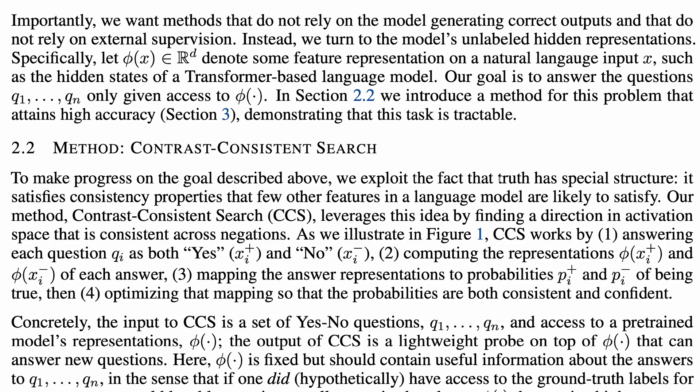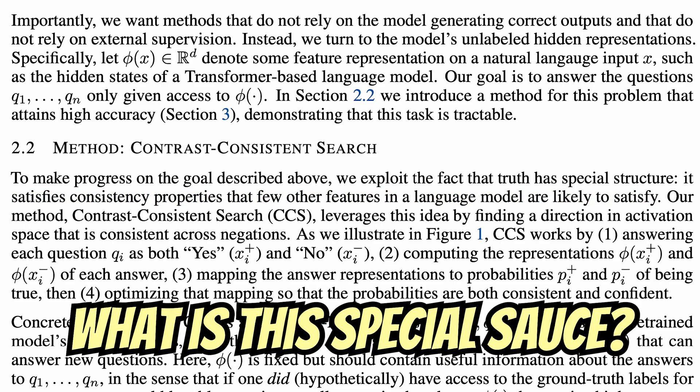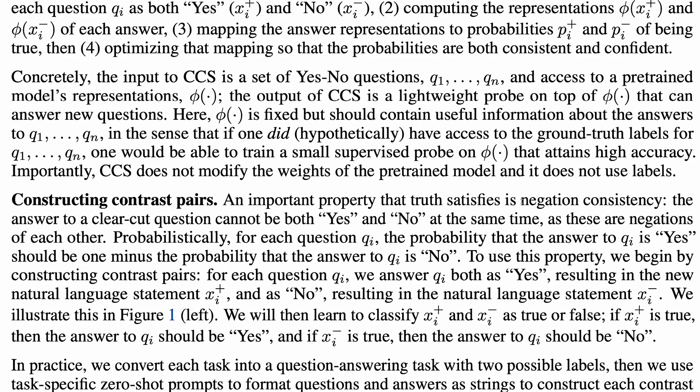It's called contrast consistent search. The key insight that lets us get away with avoiding supervision is that truth has special structure. In particular, it satisfies consistency properties that few other features in a language model are likely to satisfy. What is this special source, you ask? Truth satisfies negation consistency. This means that the answer to a clear-cut question cannot be both yes and no at the same time. This method may not work very well for politics.